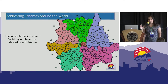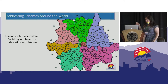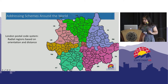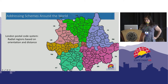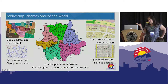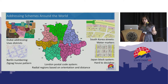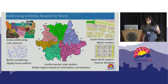To do that, we looked at organic addressing schemes like we have everywhere. One of the best examples is the London Postal Code system — radial regions based on orientation and distance. In the middle is the downtown, then north is N, west is W, et cetera, and it goes one, two, three outward. We also looked at other schemes like zigzag houses, meter markers, et cetera, researching what traditional addresses can offer us.